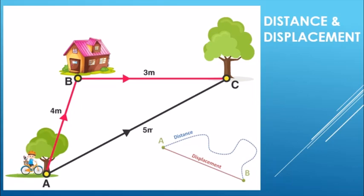Next is displacement. Displacement is the minimum distance travelled by a moving body in one direction, from the original point to the final point. This is called displacement. Displacement is a vector quantity, which means it can be identified by both magnitude and direction.